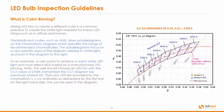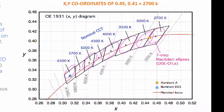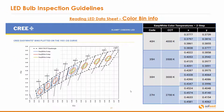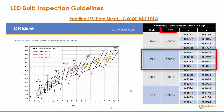As an example, a user wants to achieve a warm white LED light and must select LEDs based on the manufacturer's LED binning. Firstly, the user should choose an LED bin with a CCT value of 2700K — remember the CCT diagram we previously looked at — and then an LED bin bounded by the chromaticity XY coordinates as delineated by the first box on the right-hand side. Now let's have a quick look at a data sheet when it comes to color binning. Let's take the 35H, or the 3500K from the CCT. We have a number of XY coordinates here, all of which are just the coordinates of the bin itself.